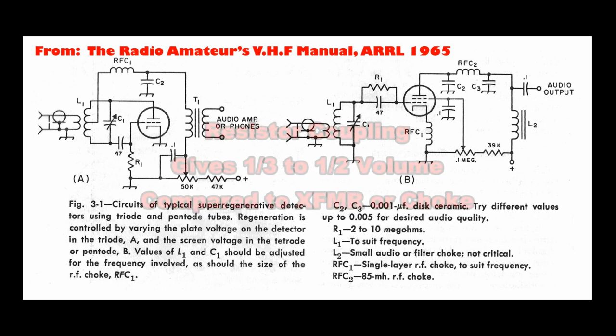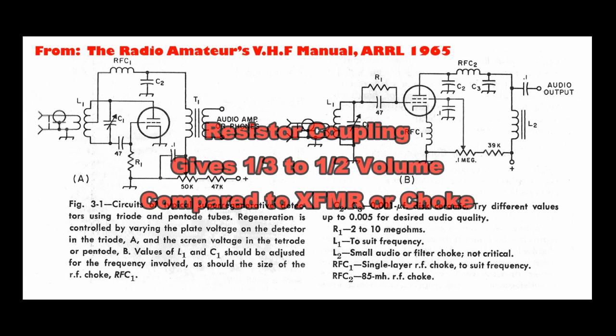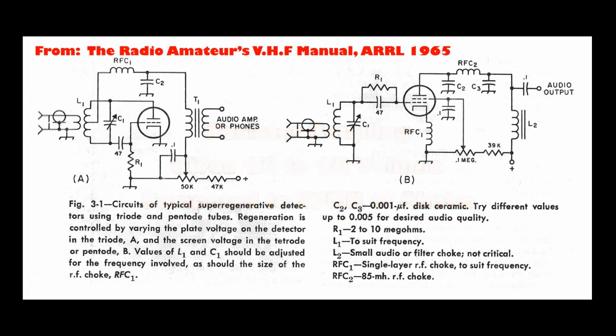Also, did you notice that both of these either use a choke or an output transformer? That's going to give the most recovered audio. Remember, these are basically very simple grid leak detectors. So the audio is a grid leak detector setup. And buried in all of this mess, we have several things happening at once. We have the RF frequency. We have the quench frequency oscillation. And we need to separate the audio from both of those. And that's what the low-pass filter is all about with C2 and C3 and RFC2.